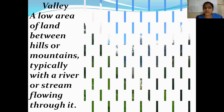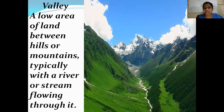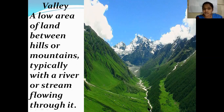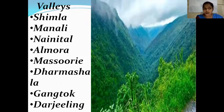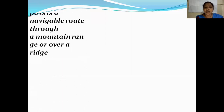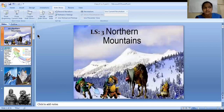In the middle or lesser Himalayas, we also have valleys. A valley is a low area of land between hills or mountains, typically with a river or a stream flowing through it. Some important valleys located in the middle or lesser Himalayas are Shimla, Manali, Nainital, Almora, Mussoorie, Dharamshala, Gangtok, and Darjeeling.